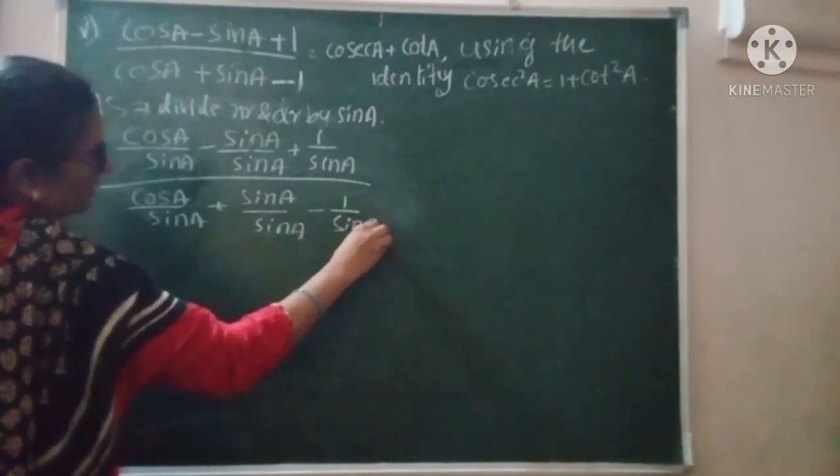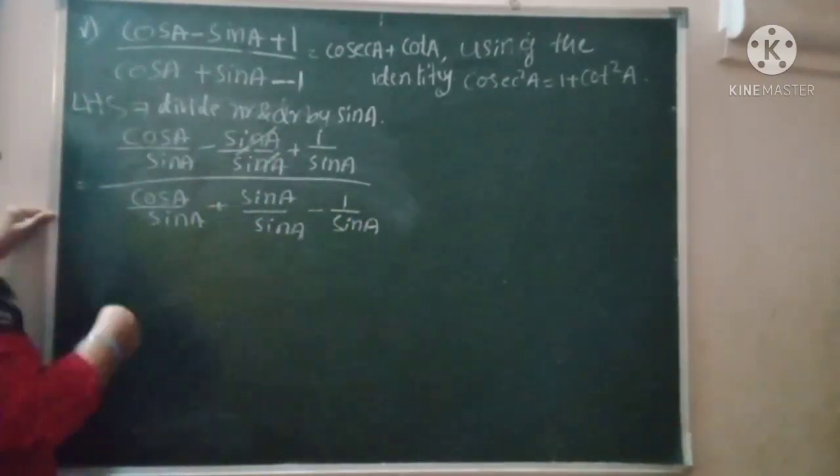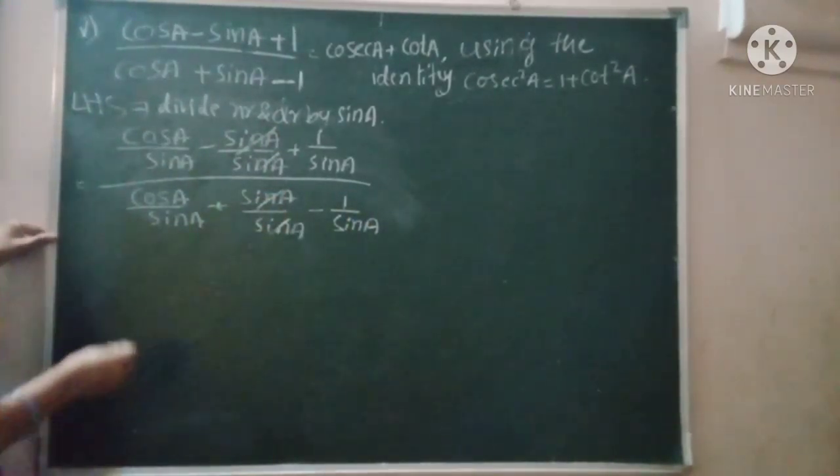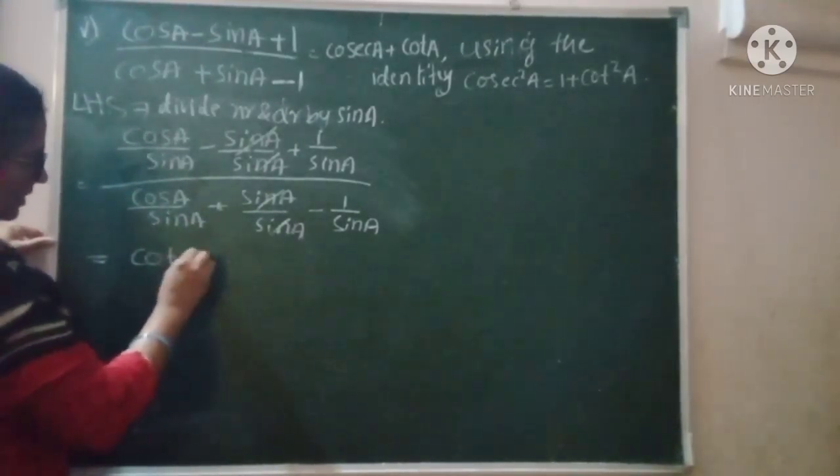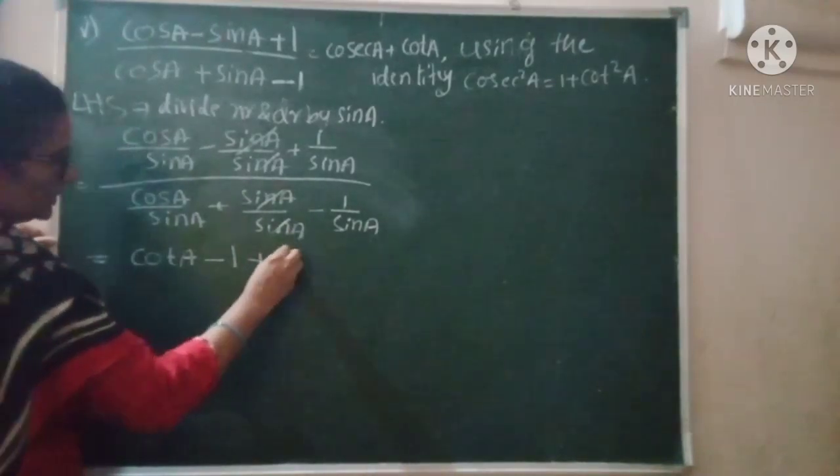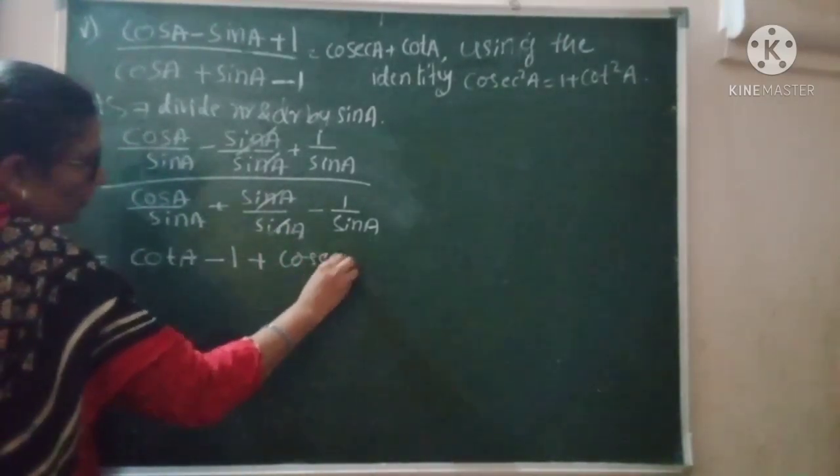Look at this one, very interesting. This sin A, sin A cancels. So we get cot A plus 1 minus cosec A.